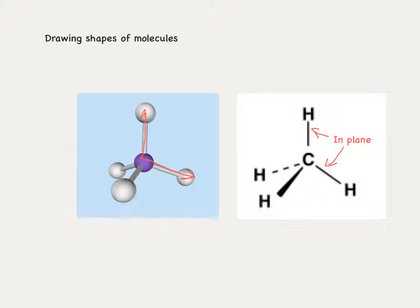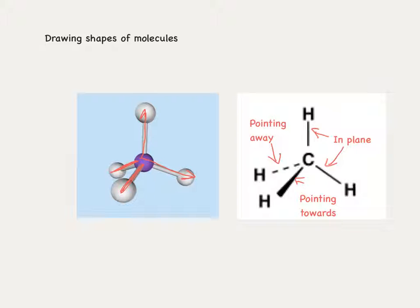The carbon-hydrogen bond moving away from us is represented by the dashed line — the dashed line pointing away from us. The final bond is one coming towards us, and we represent a bond coming towards us by the wedge. Here we have the wedge indicating a carbon-hydrogen bond coming towards us. Make sure you're happy with that representation; we'll be looking at how we draw those in more detail in part two.